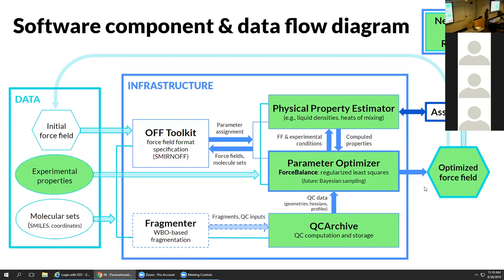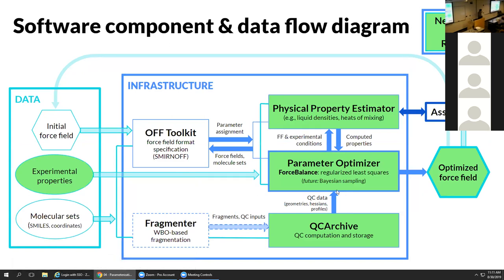Here is a version of our software component and data flow diagram - the parts in green are what I'm going to be talking about. The parameter optimizer takes information from quantum chemical calculations from QCArchive, and also incorporates experimental properties and the differences between simulated and experimental properties. We rely on Simon's property estimator toolkit for that. After optimization, we end up with an optimized force field and eventually the new release.